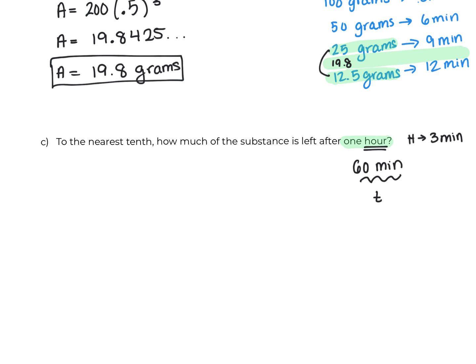This is where doing by hand wouldn't be as helpful, but the formula would be. So A equals P times 0.5 to the t over H. My starting value is still 200. My 0.5 stays the same. The t this time is 60, and then my half-life is 3.